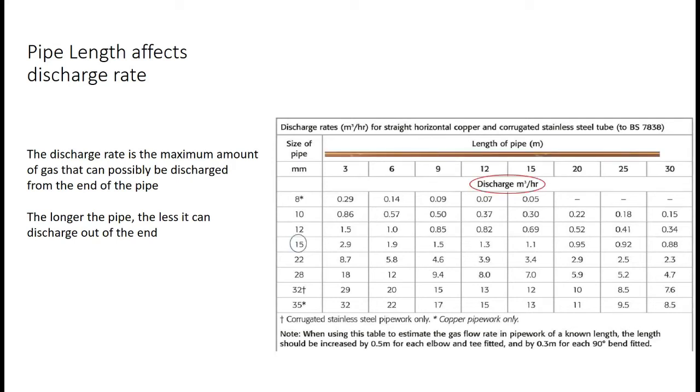For example, if we have a 15 millimetre pipe, if you have 3 metres of it, that can pass 2.9 metres cubed per hour of gas. But if you have 6 metres of it, it can only pass 1.9 metres cubed per hour.